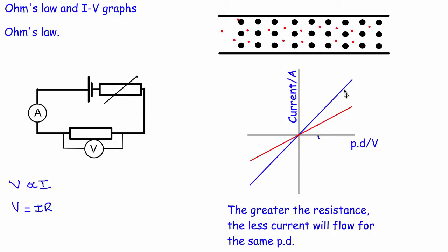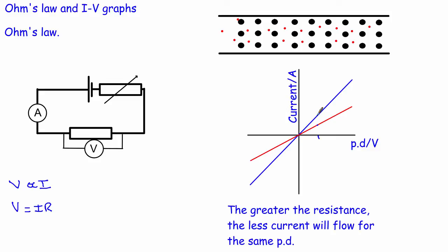We might want to ask which of these two resistors has the greatest resistance. Descriptively, if we look at a particular potential difference, the resistor that generated the red line has a much smaller current than the one that generated the blue line, so the red one must have the biggest resistance. It has a big resistance because less current is flowing for the same potential difference — it's important to mention 'same potential difference'.